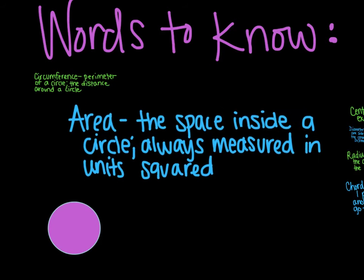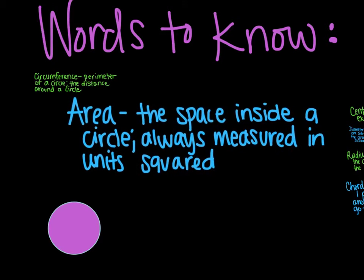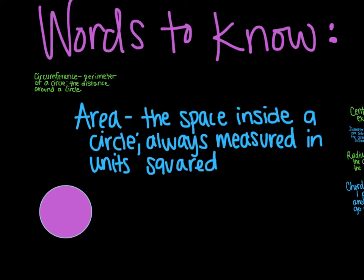Area of a circle is the space inside the circle. So in this example, it is the purplish color, the area inside, the space inside. Please note that it is always measured in squared units, so your label will always be squared.